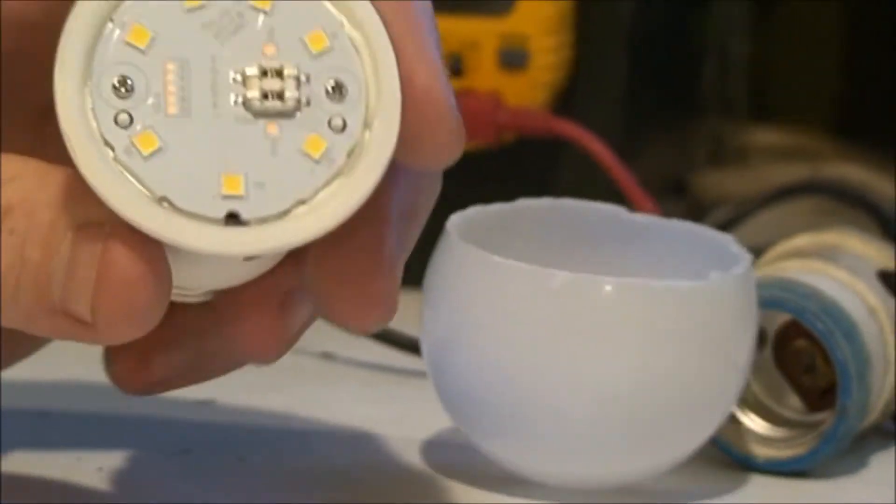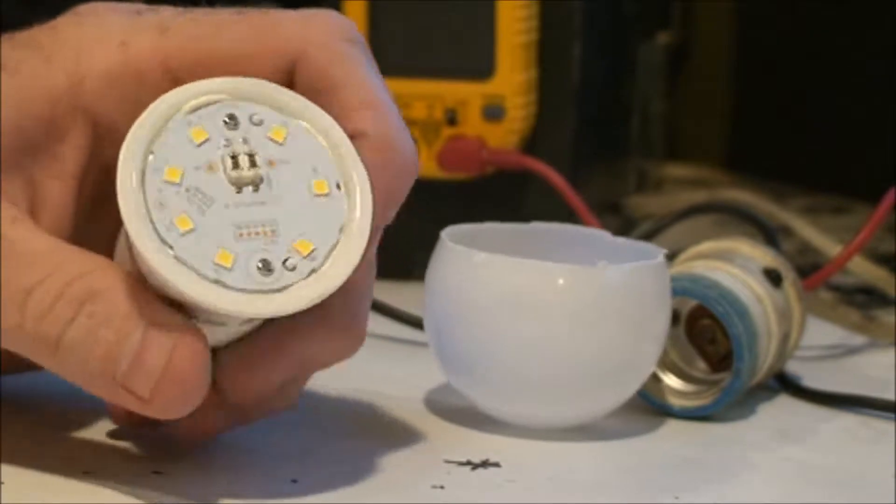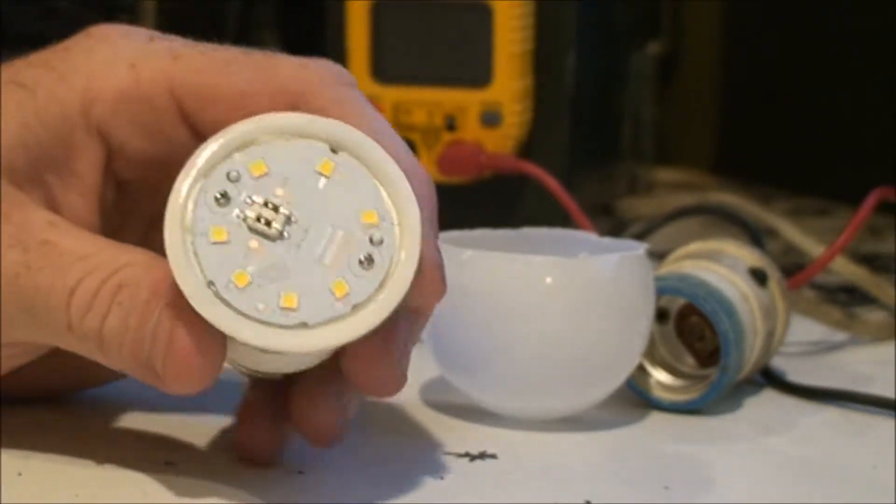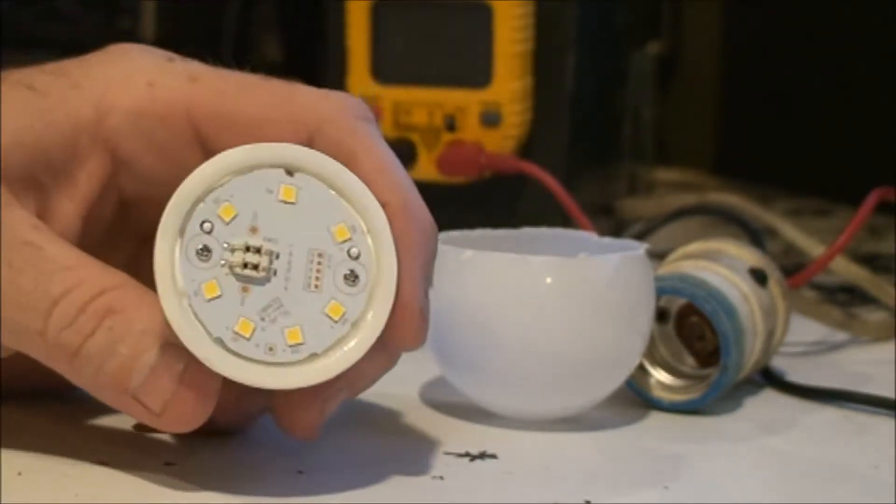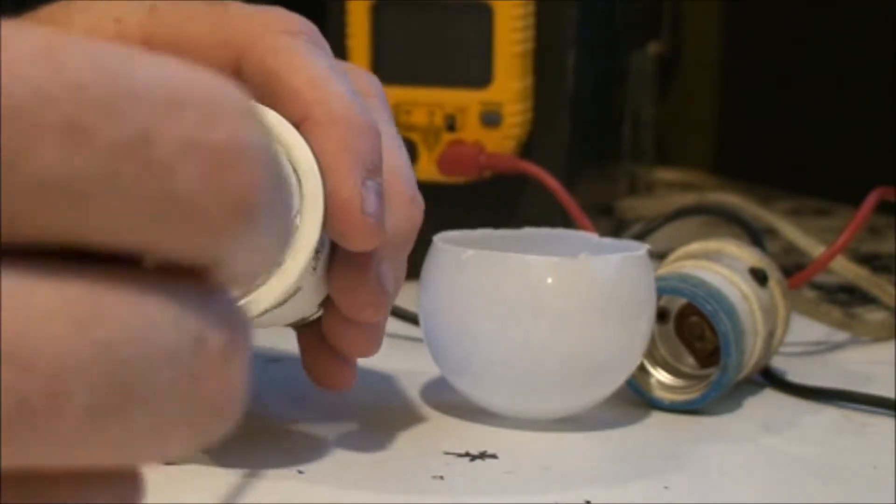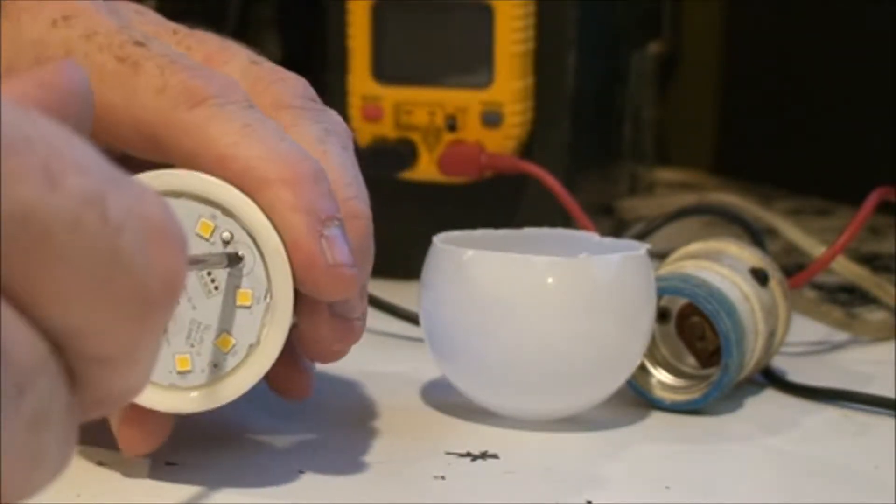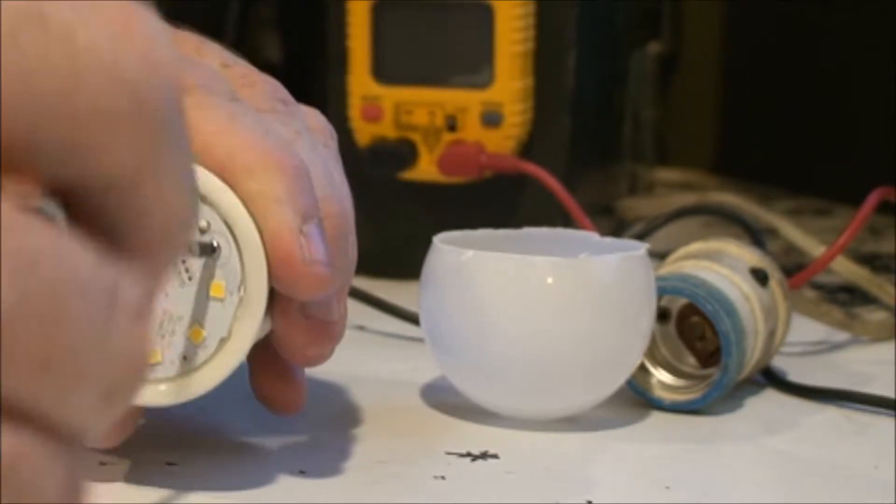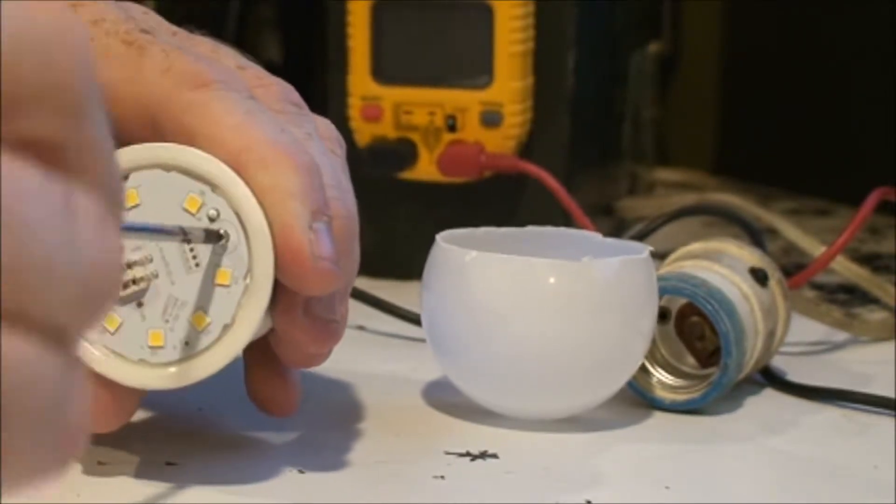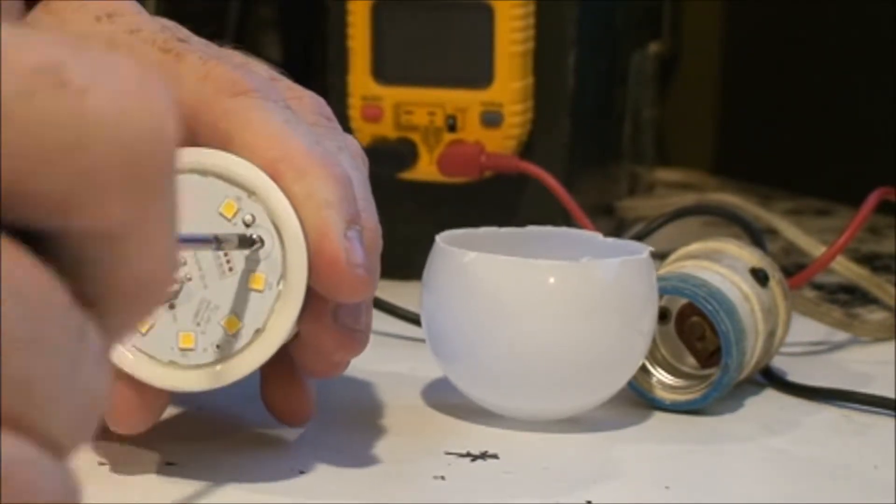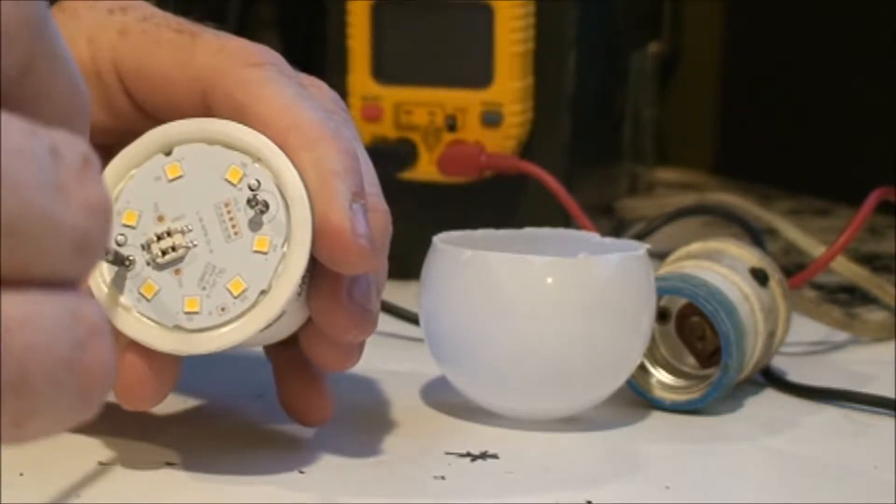They're fairly cheap on Amazon for about $29 for a nine-pack. What's great about these is they're very easy to disassemble. We'll also be checking the voltage output of the line voltage converter that's built in.